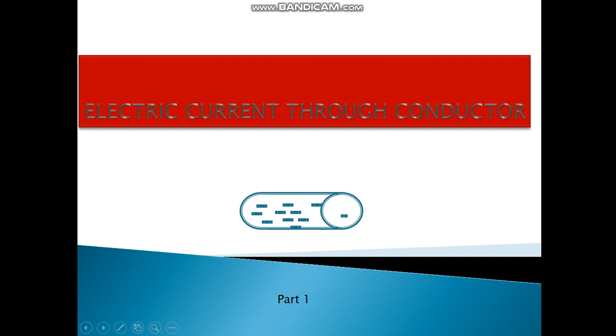We know that electrons are responsible for the flow of current through conductors. We are going to see that the current is opposite to the flow of electrons in electric current through conductors.